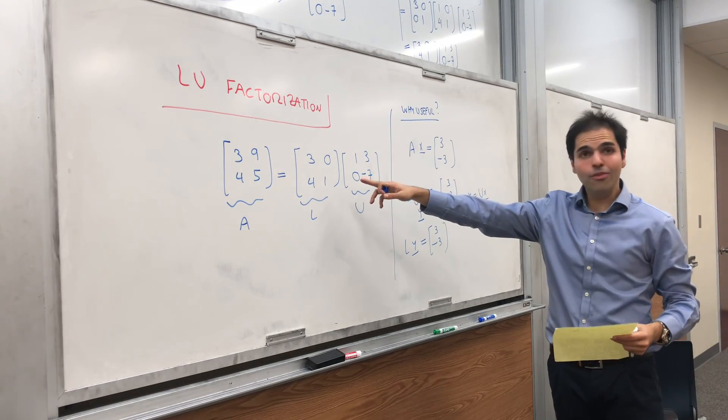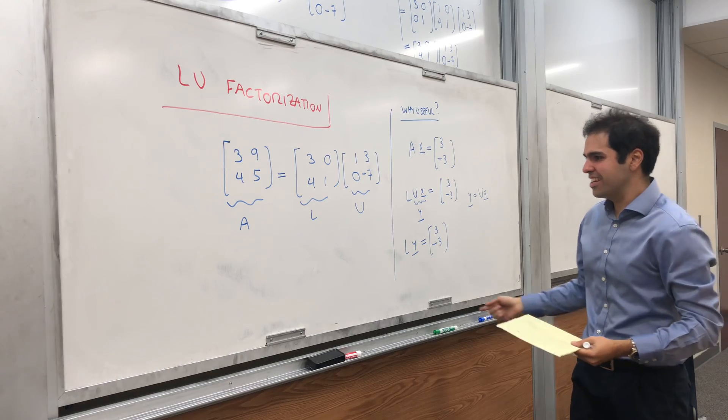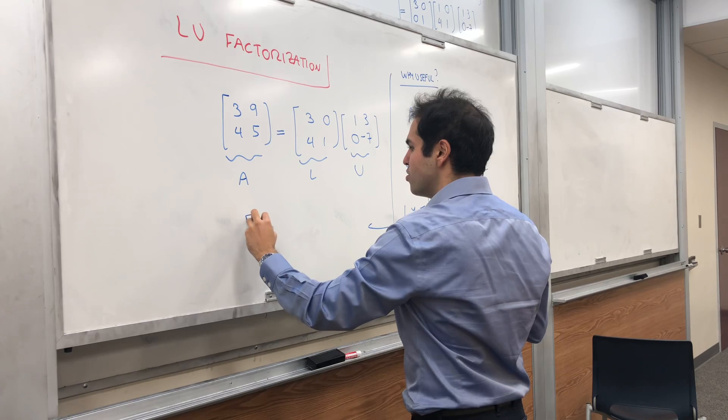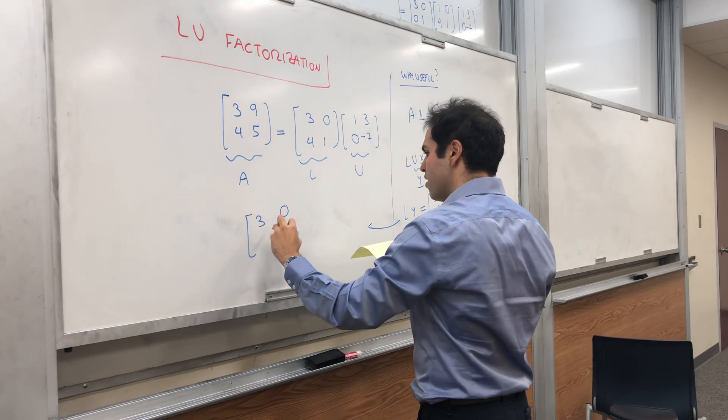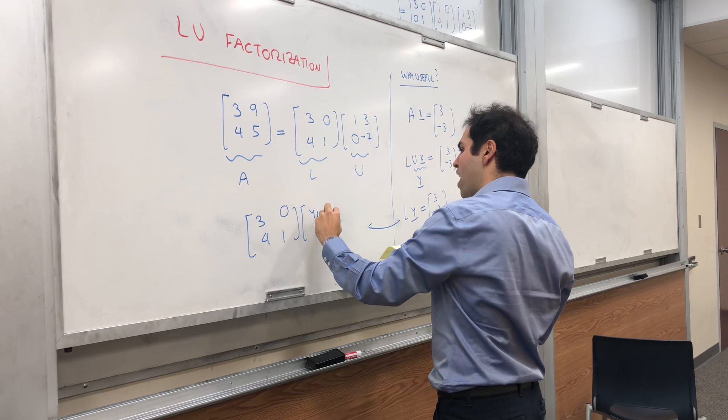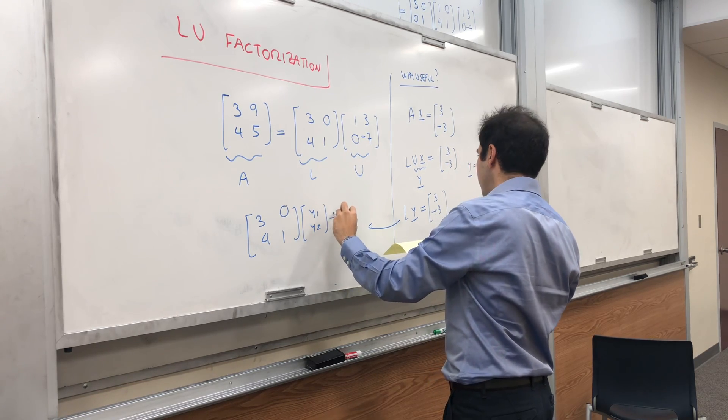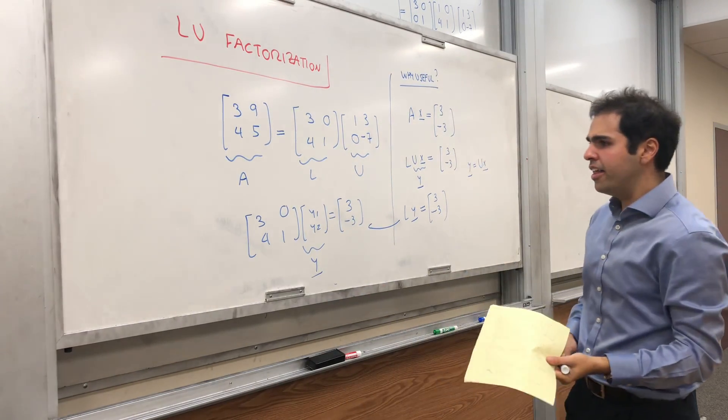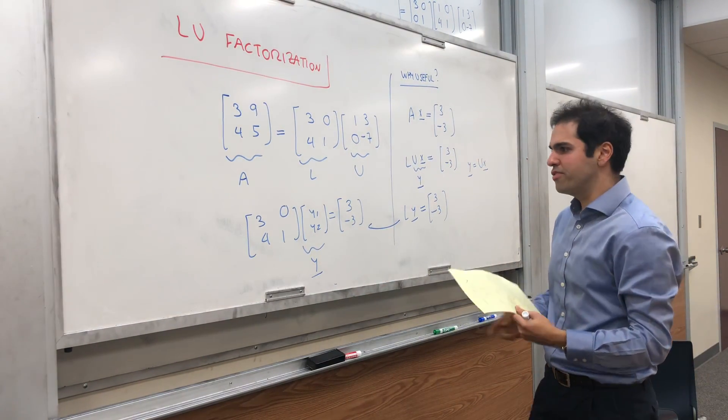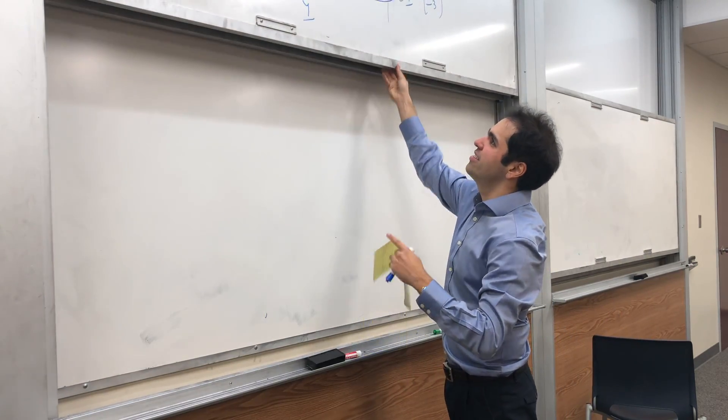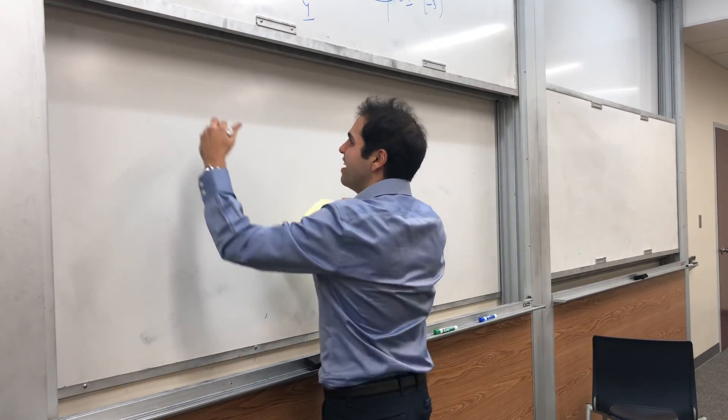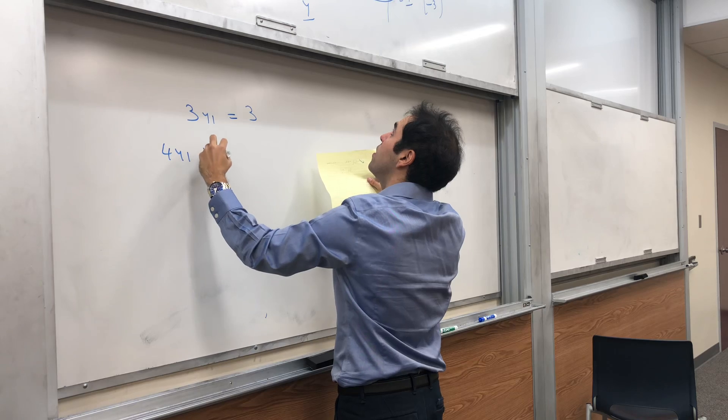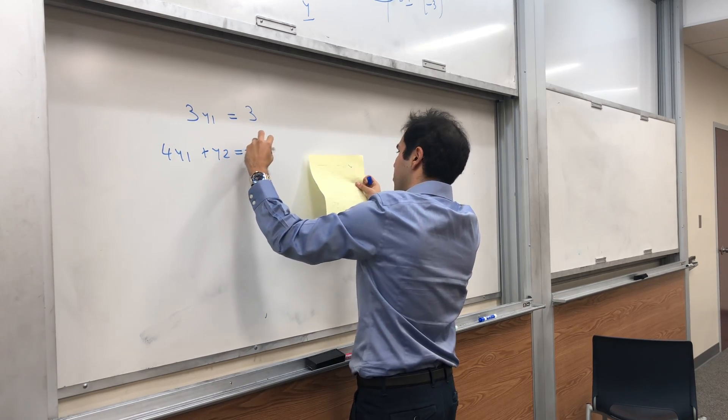Now, let Y be UX. Then, all we really need to solve first is LY is 3 minus 3. But, L was really easy. So, it turns out this system becomes very easy to be solved. So, maybe let me write that here. So, really what we have to solve is 3, 0, 4, 1, Y1, Y2 equals 3 and minus 3. So, this is Y. And, let us write this in terms of systems of equations. And, you'll see why this is useful.